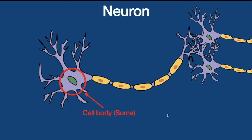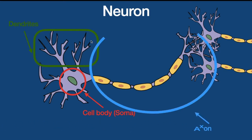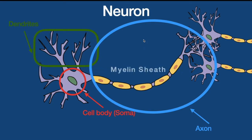Then we have the dendrites, which are these branch-like parts over here. And lastly, we have the axon. The axon has these yellow structures called Schwann cells, which are made up of myelin — they make up the myelin sheath. Another word for the axon is nerve fiber.